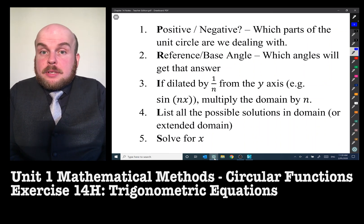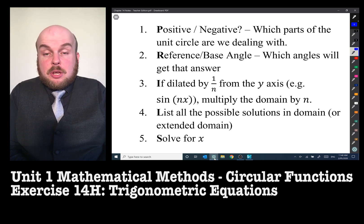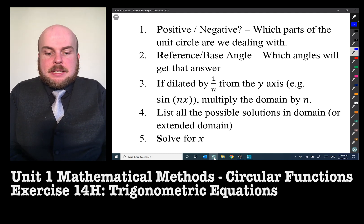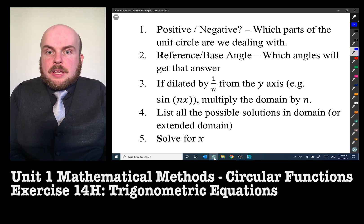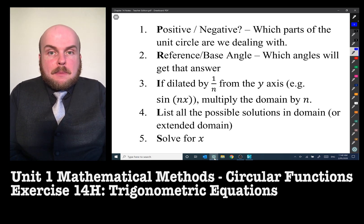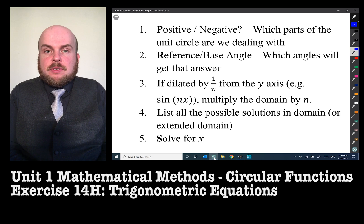The process is as follows. One, is your answer positive or negative? And that will determine what quadrant you'll be in or what quadrants you'll be dealing with. Two, reference slash base angle. What base angle will get you the answer that you're looking for? Three, if it's been dilated, so in other words it's got an n value on the inside, we need to multiply the domain by n. Four, we list all the possible solutions and then five, solve for x.